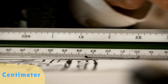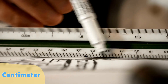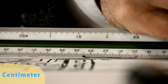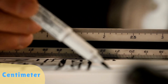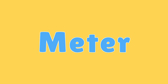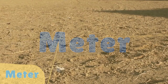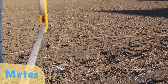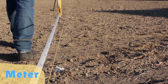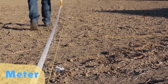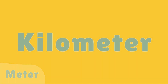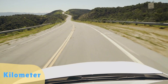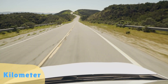Centimeter: a unit of length equal to one hundredth of a meter. Meter: the fundamental unit of length in the metric system, approximately equal to 3.28 feet. Kilometer: a unit of length equal to one thousand meters.